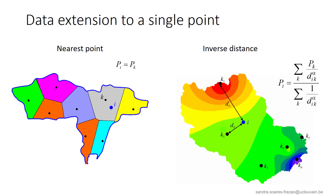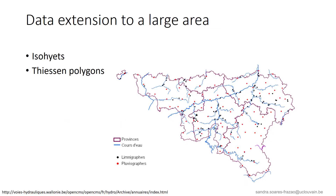The inverse distance method is a weighted average method that is more accurate than just the nearest point method. Pi is the precipitation at a selected point I, while Pk represents the precipitation at neighboring gauges. Dik is the distance between point I and each neighboring gauge. Alpha here is an exponent, and usually its value is equal to 2. To determine the average precipitation over a larger area, for example an entire catchment, two methods can be used: the methods of Isoyettes and the Thiessen polygons.